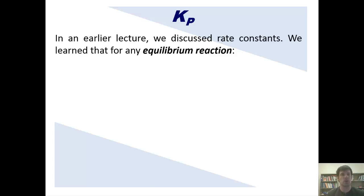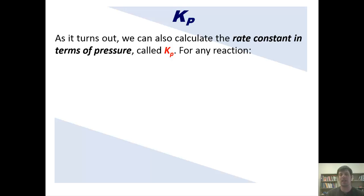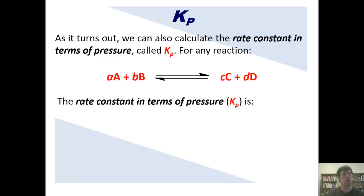In an earlier lecture, we discussed rate constants. We learned that for any equilibrium reaction such as this one, the rate constant Kc is equal to this. As it turns out, we can also calculate rate constants in terms of pressure, called Kp, which we also mentioned in an earlier lecture. Thus, for any reaction like this one, in which each of the components are gases and they have to be gases,